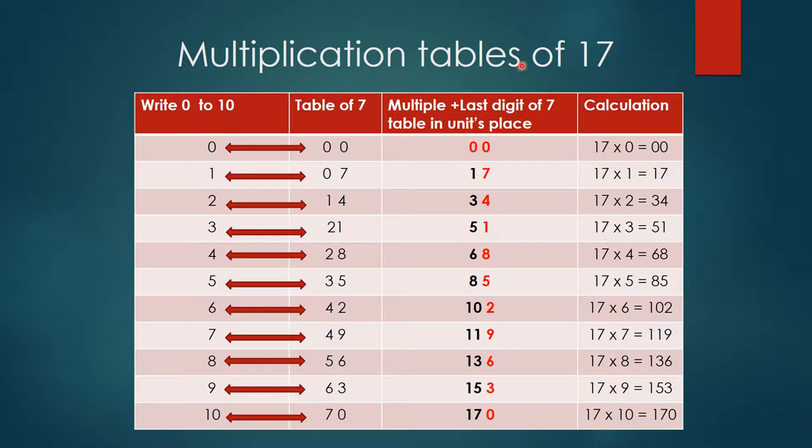Then the next trick is the next number is 7, right? So I am going to write tables of 7 over here. So 7×0 is 0, 7×1 is 7, 7×2 is 14, 7×3 is 21, 7×4 is 28, 7×5 is 35, 7×6 is 42, 7×7 is 49, 7×8 is 56, 7×9 is 63, 7×10 is 70.